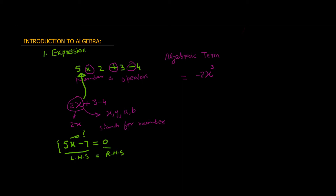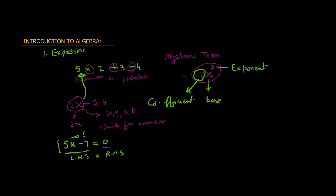In this algebraic term, what is X? As I already mentioned, X is an unknown number, but there is also a name for this: it is called the base, because it has an exponent. It also has a coefficient. So an algebraic term has the form: A is the coefficient, X is the variable, and N is the exponent. An algebraic term has the form A times X raised to the power N.